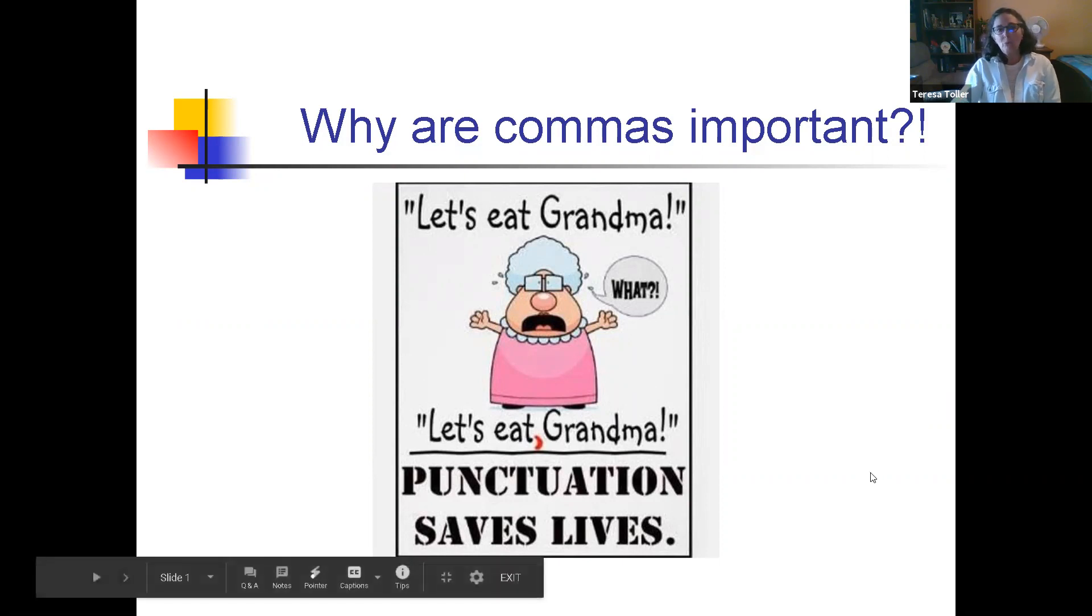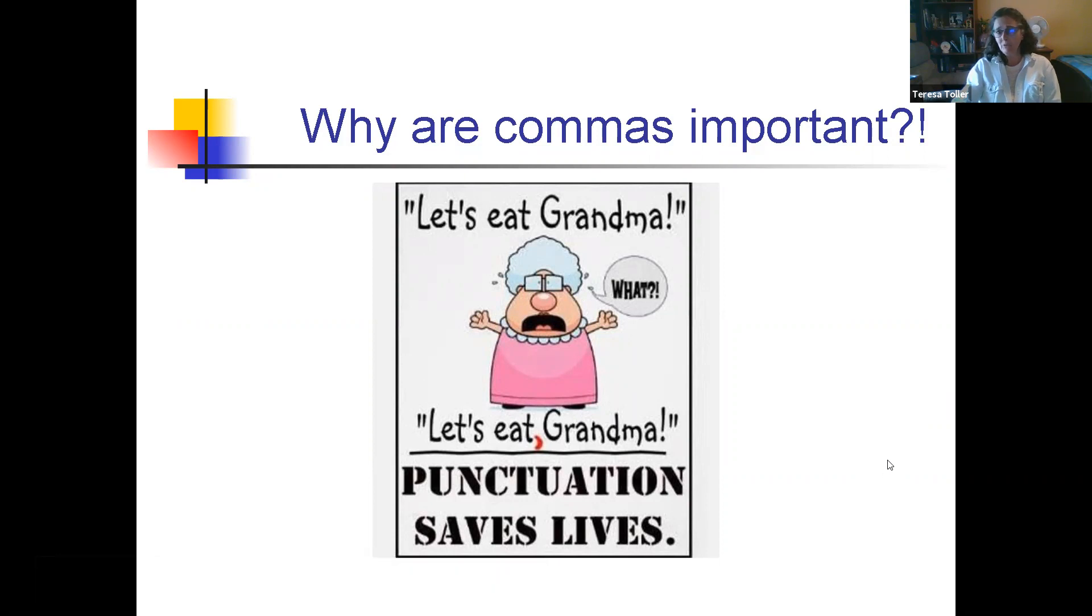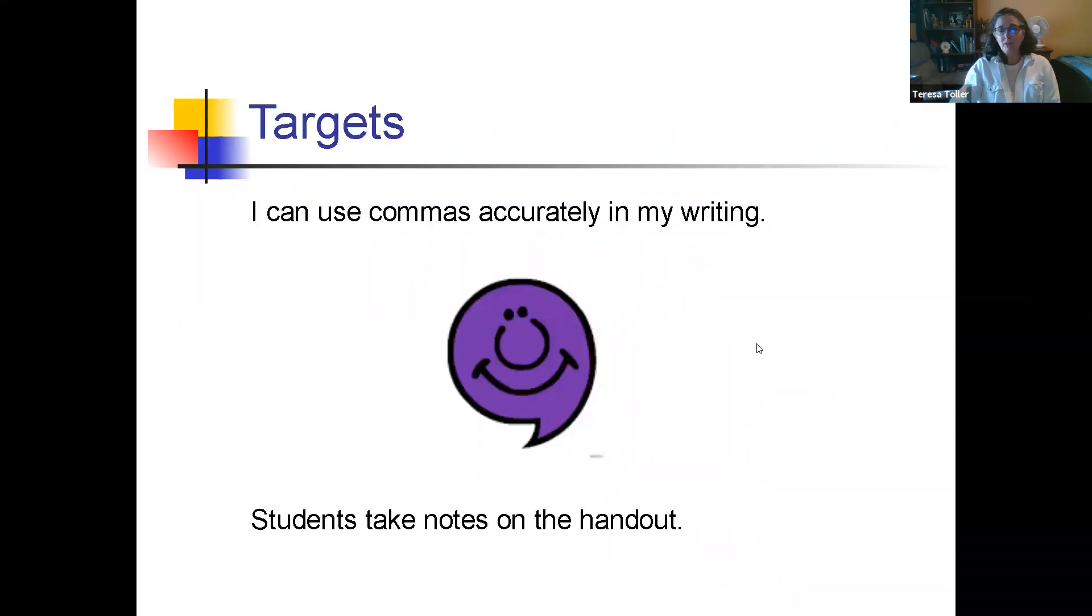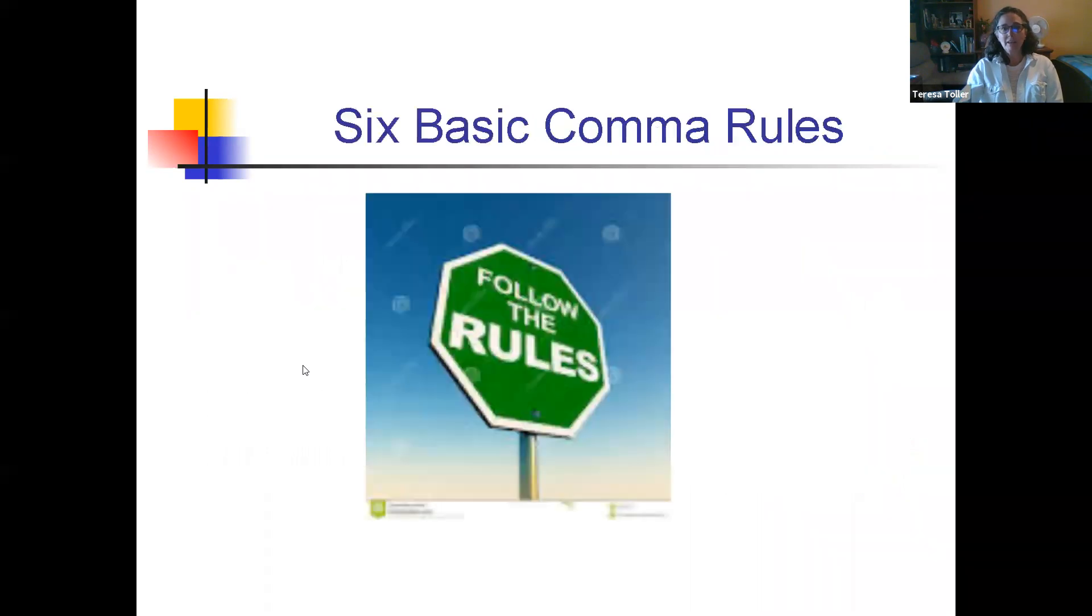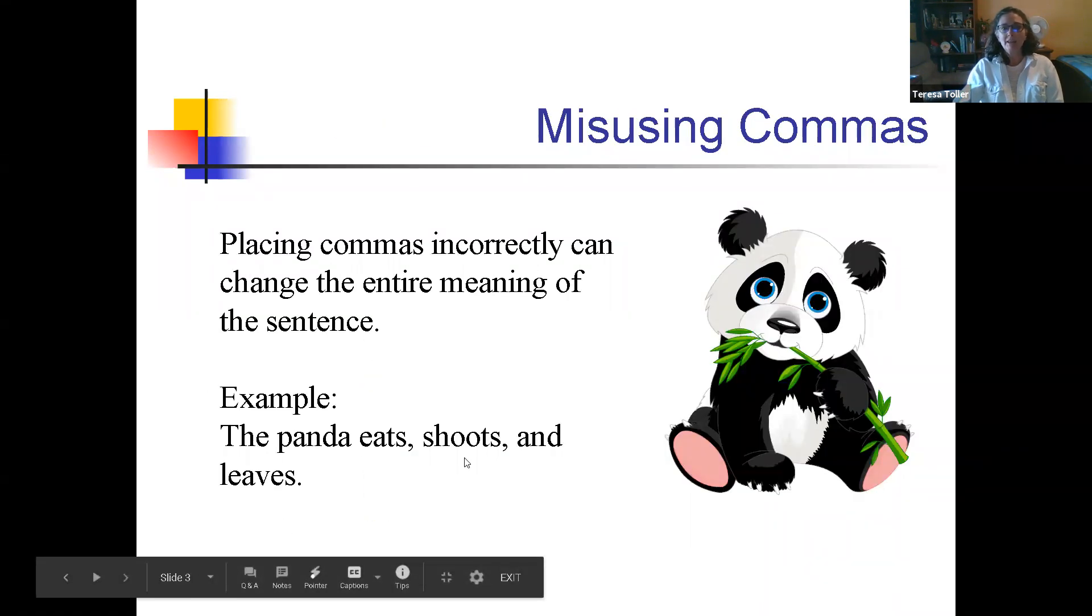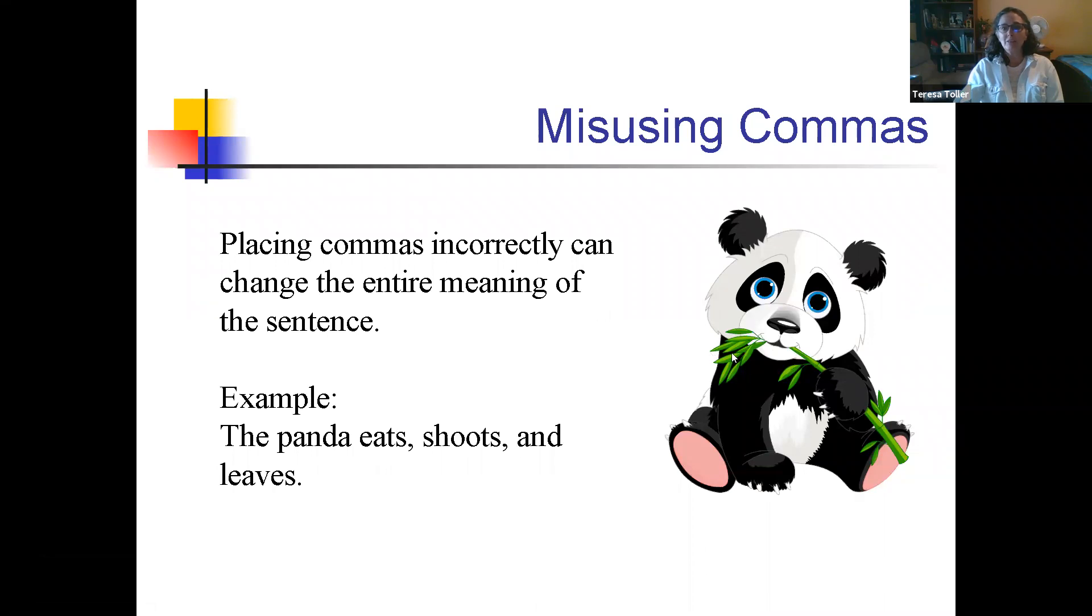So why are commas important? If you look at this example, you can see that we're either going to eat grandma or you're going to ask grandma to have a meal. So our target or our objective for today is to help you learn how to use commas accurately in your writing. When you misplace commas, you can change the entire meaning of the sentence. This one we have a panda. The panda eats shoots and then leaves instead of the panda eats shoots and leaves, meaning that it eats the bamboo shoots and it eats the bamboo leaves.